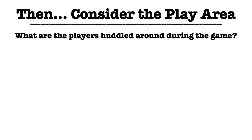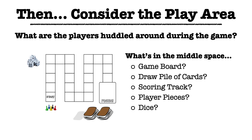When considering your components, another thing to think about is the play area. This is something a lot of people tend to overlook or wait until later to consider, which can sometimes backfire. Think about it as a bird's-eye view watching the game being played from above — what are players all huddled around? What's in the middle between all the players? It might be a game board, a draw pile and discard pile for cards, a scoring track, player pieces, dice — whatever it might be.